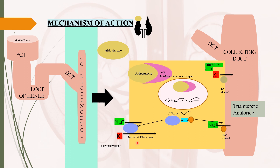In exchange, potassium ions are secreted into the principal cells through the same sodium-potassium ATPase pump. Sodium reabsorption from the collecting duct makes the lumen electronegative, as a result of which potassium ions are secreted into the collecting duct through potassium channels present on the luminal membrane of principal cells. Sodium reabsorption here is regulated by aldosterone.